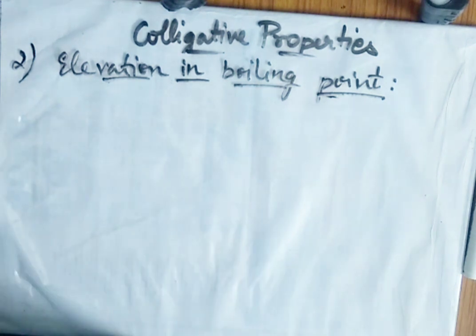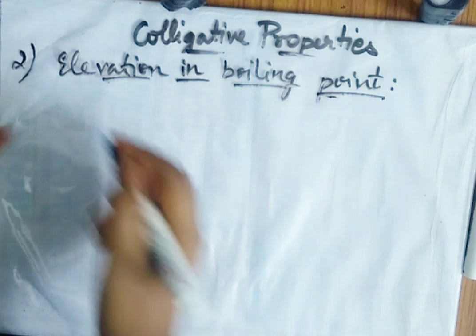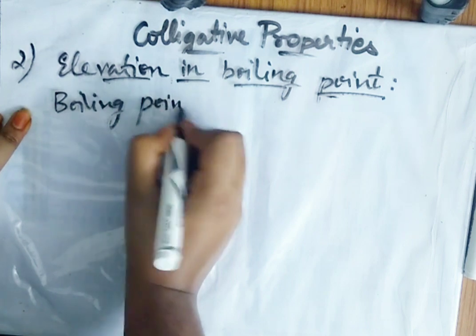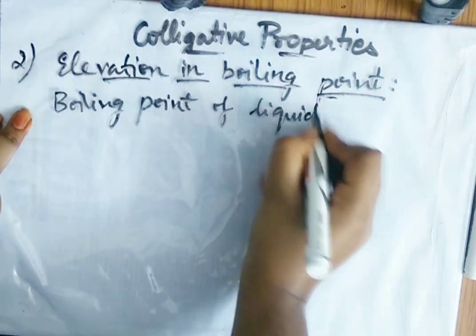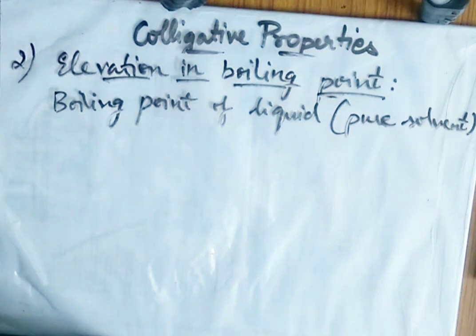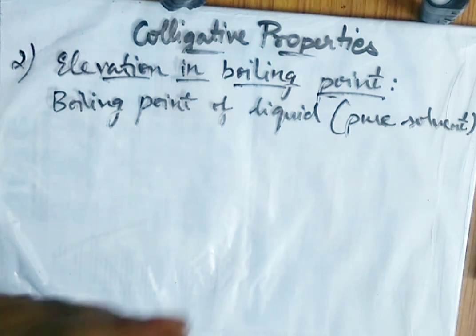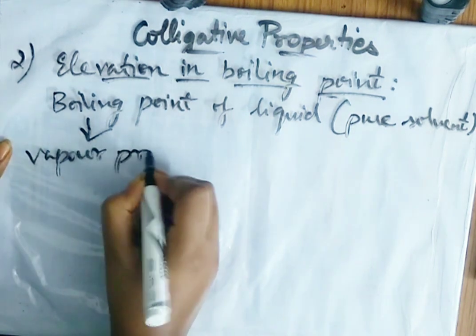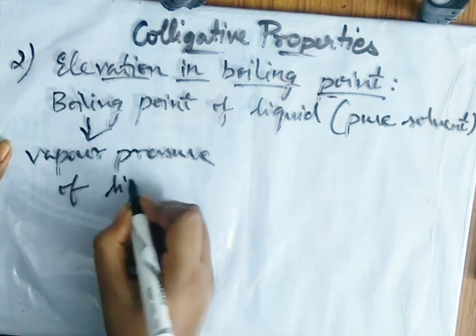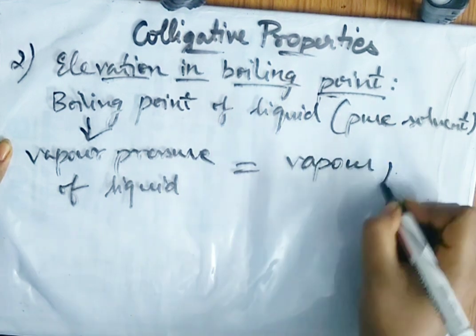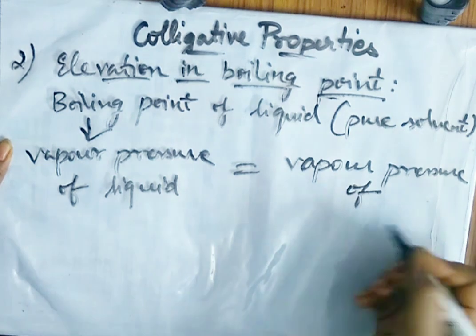First, what is boiling point? The boiling point of a liquid — by liquid I mean pure solvent — is the temperature at which the vapor pressure of the liquid is equal to the atmospheric pressure.